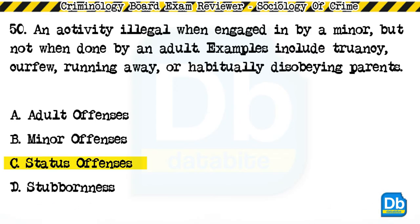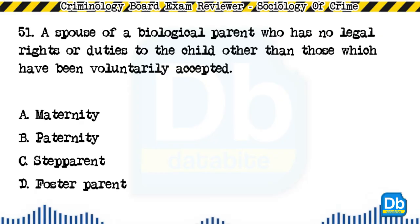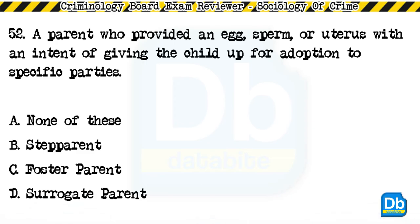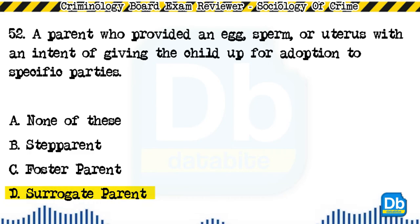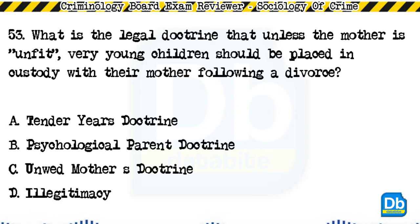The answer is C, status offenses. Question 51: A spouse of a biological parent who has no legal rights or duties to the child other than those voluntarily accepted: a) maternity, b) paternity, c) step parent, d) foster parent. The answer is D, surrogate parent. Question 53: What is the legal doctrine that unless the mother is unfit, very young children should be placed in custody with their mother following a divorce? a) tender years doctrine, b) psychological parent doctrine, c) unwed mother's doctrine, d) illegitimacy. The answer is A, tender years doctrine.